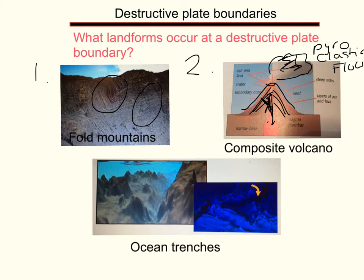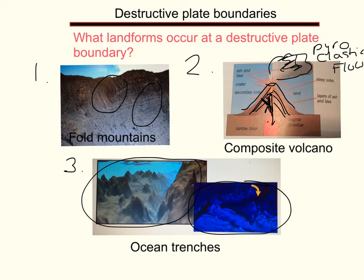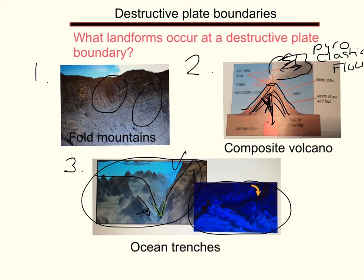The third type of landform at a destructive plate margin is oceanic trenches. These pictures are simulations — one is a simulation of the Marianas Trench, one of the deepest parts of the ocean. An oceanic trench is formed where the oceanic plate sinks down beneath the continental plate. The V-shape that forms between the two plates as one subducts underneath the other is called the oceanic trench.